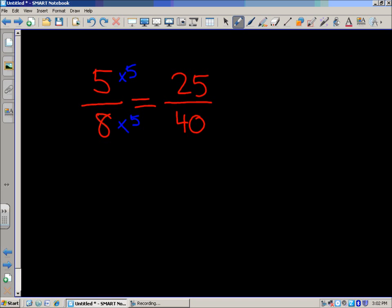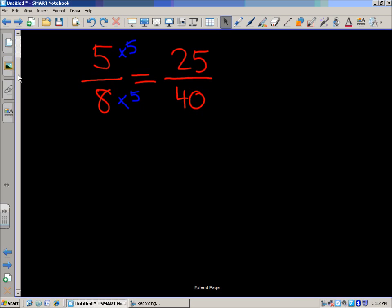There you have it. So anytime you're given a complete fraction like five eighths and you're missing a numerator or denominator, you can figure that out. Let's try another example. We'll go with seven over twenty-one equals... if you're given the numerator, you can also find the denominator.